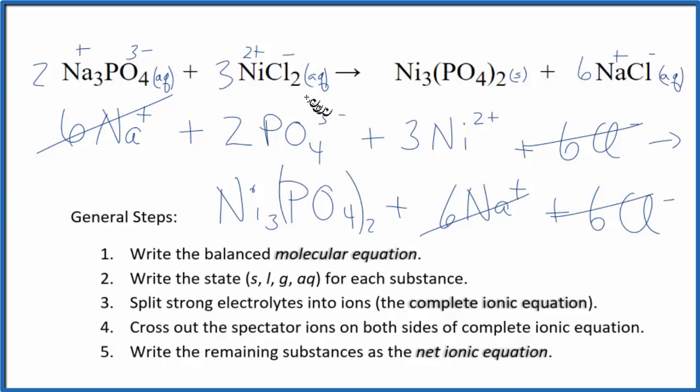But everything else is unique. So this is going to be the net ionic equation for Na3PO4 plus NiCl2. Let me clean this up, and I'll write the states in, and then we'll have our net ionic equation.